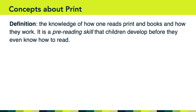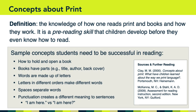So, what are the concepts about print? Well, those concepts are the knowledge of how one reads print in books and how books and print actually work. This knowledge is a pre-reading skill that children develop before they even know how to read. When we're talking about concepts about print, we're talking about young children, usually in the two to four age range, and sometimes a little bit older. Here are some sample concepts children need to know and understand in order to be successful at reading. For example, children need to know how to hold and open a book. They need to understand that books have parts, such as a title, an author, and a back cover, and they need to know that words are made up of letters, and letters in different orders make up different words.